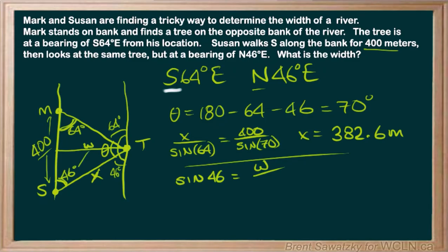opposite, over our hypotenuse, which is our X, which we figured out in our previous step, 382.6 meters. And so we can multiply both sides by 382.6.